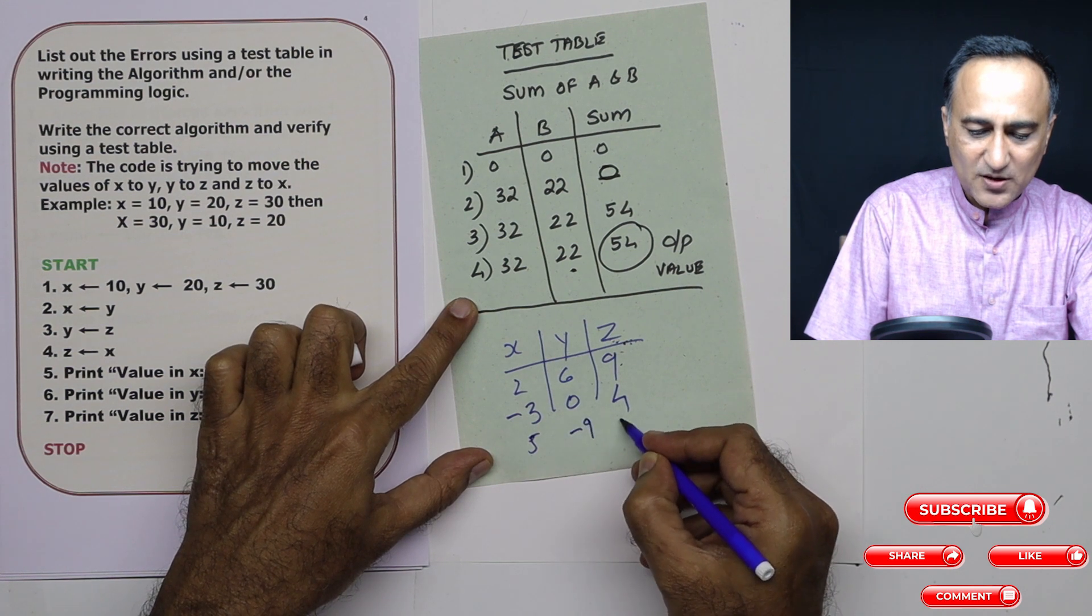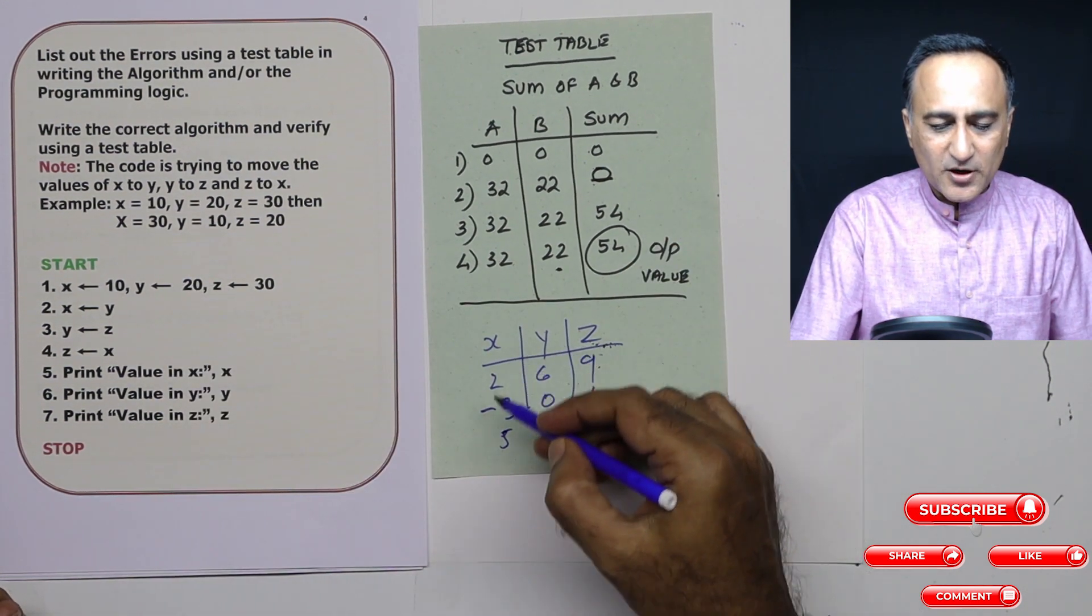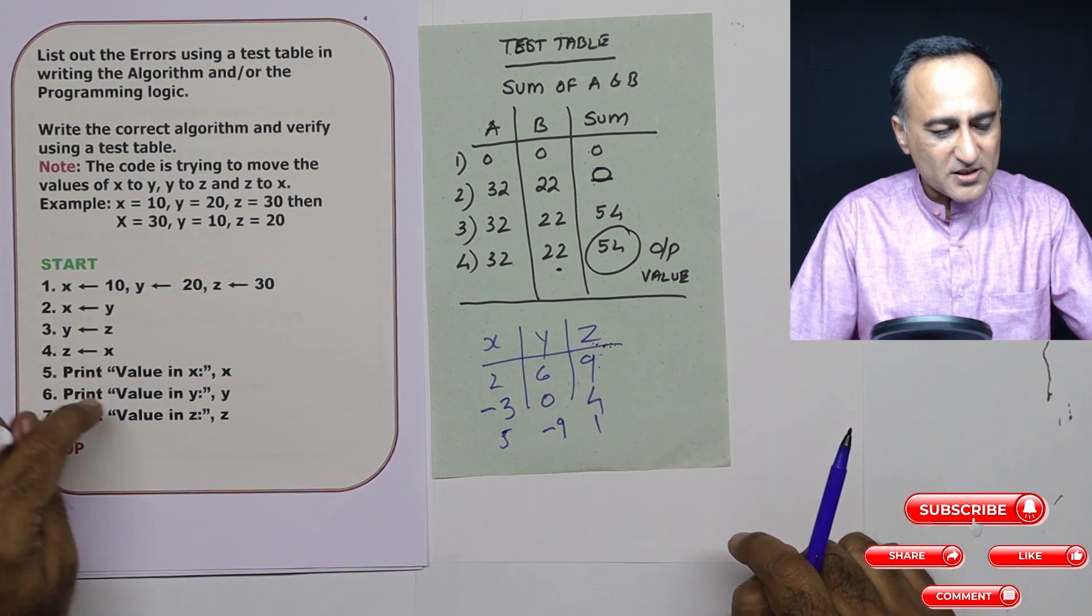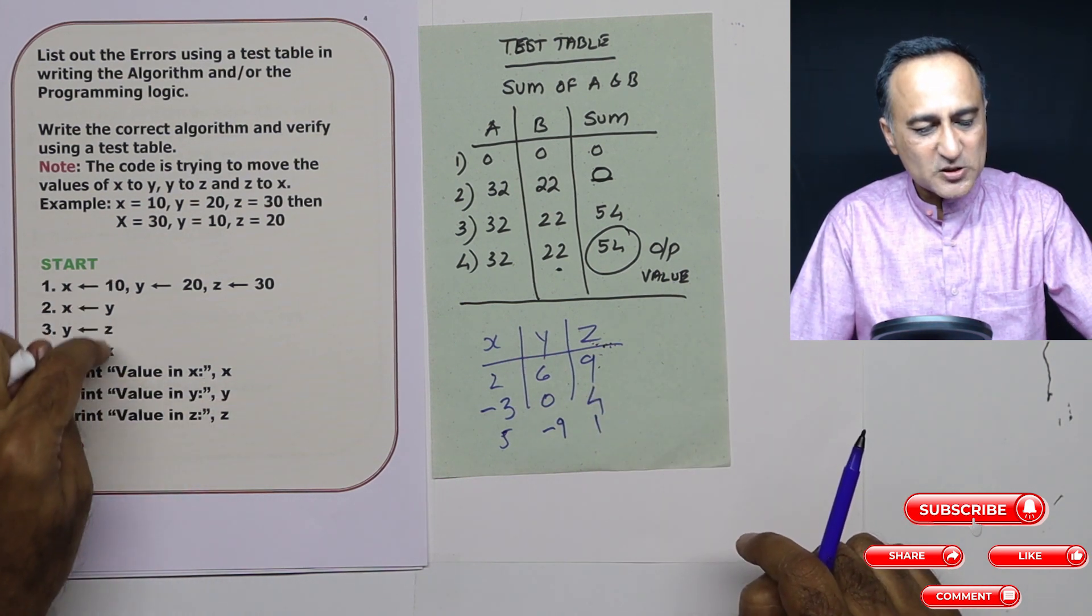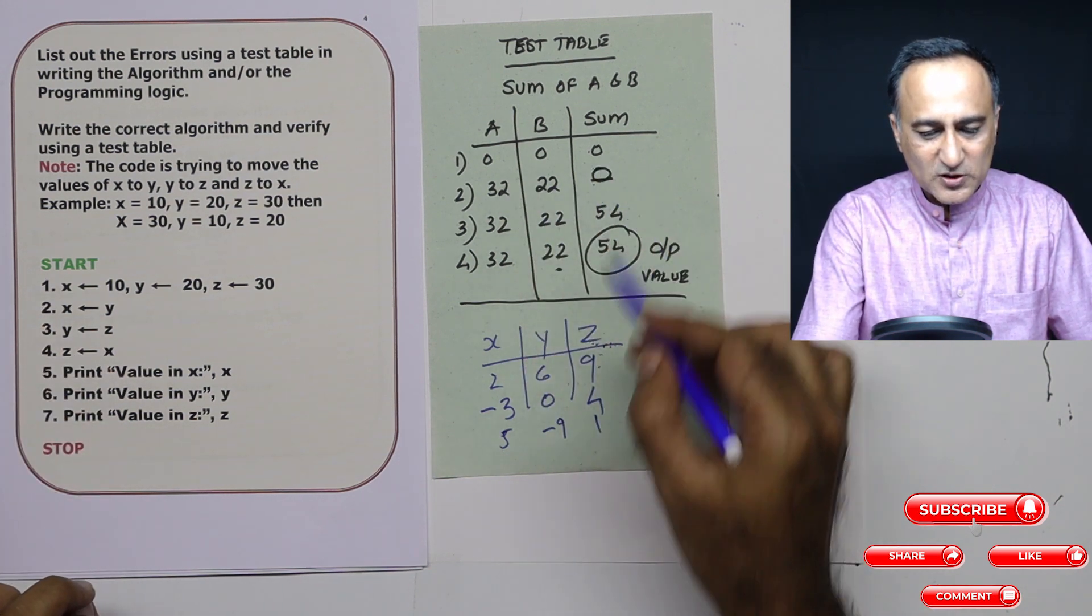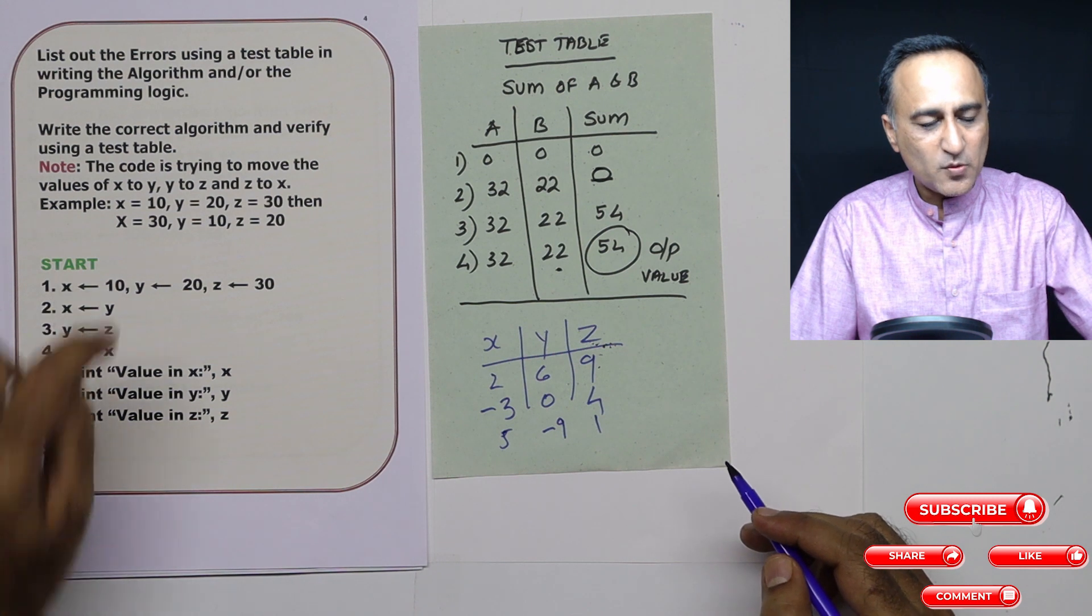5 minus 9, 1. So you can take these different values of x, y, z and produce a test table and see what is the final value of x, y, z in this particular logic. Go step by step and see how the values of x, y and z change and tell me what is the output.